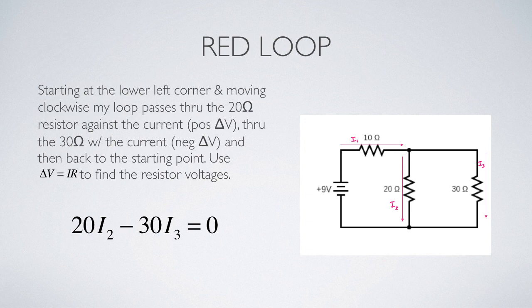I cannot do a loop rule around the outside loop from 9-volt to 10-ohm to 30-ohm back to the battery. Because if I did that, then that equation wouldn't be independent of the two I've already generated, and my system of equations would not have a solution.